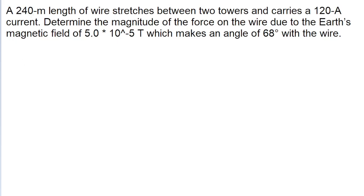Hey guys, in this problem we have a length of wire, and we're given the length, we're told how much current is being carried by the wire, we're told the magnitude of the magnetic field, the magnetic field of the Earth acting on the wire, and the angle between the Earth's magnetic field and the wire.